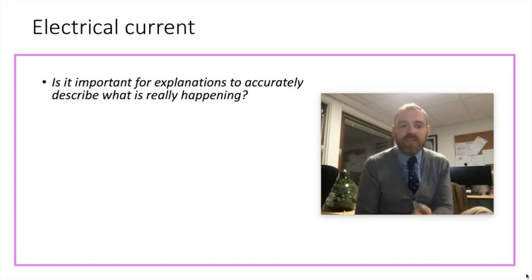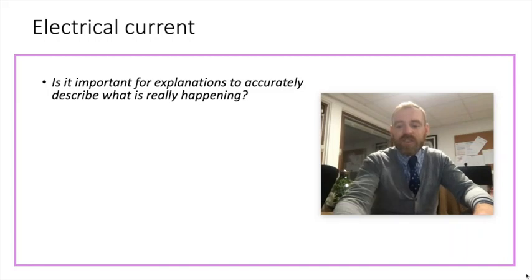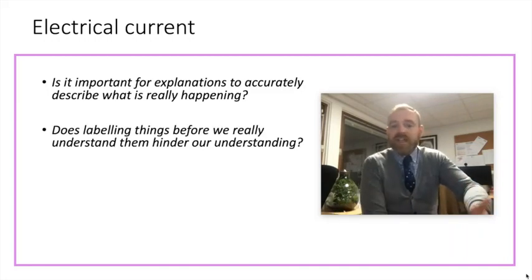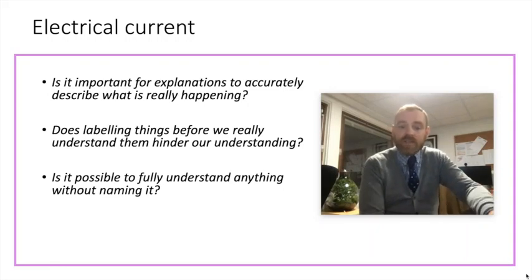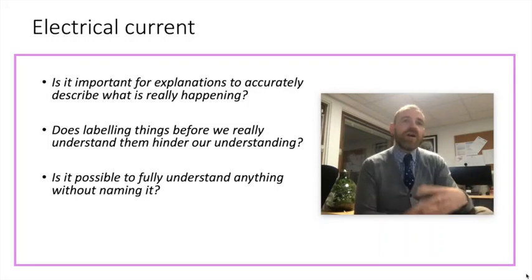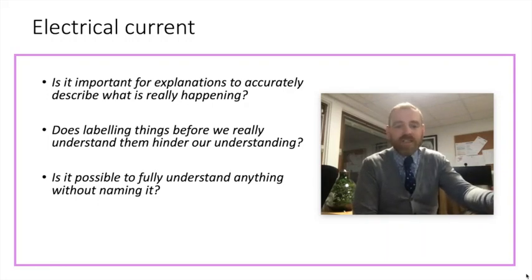But because current was defined before it was understood, we've defined it in an awkward direction. Now, this is a really brilliant place to bring in TOK questions. Is it important for explanations to accurately describe what's happening? When we teach at GCSE level, for instance, we need to know electrons are moving around the circuit, we don't really address the direction in which they're traveling. Does labeling things before we really understand them hinder our understanding? And is it possible to fully understand anything without naming it? So these are three questions we could extract from that conversation about electrical current. Rather than being an awkward conversation to have, it's a really interesting conversation to have, and one that we can send students away with questions to take to their TOK classes.